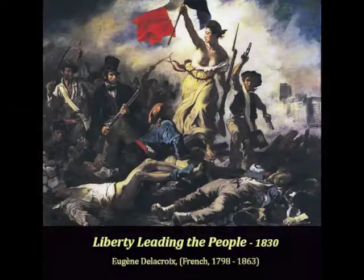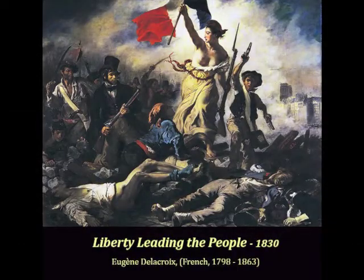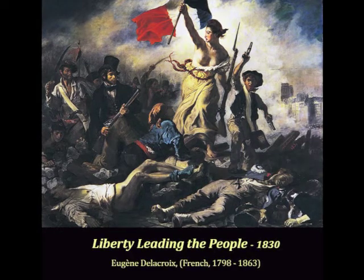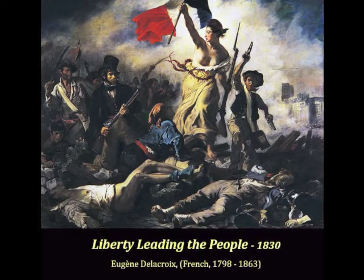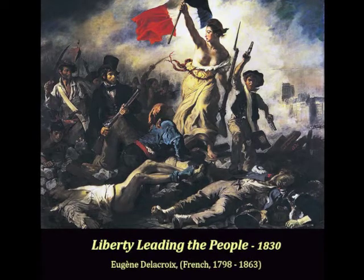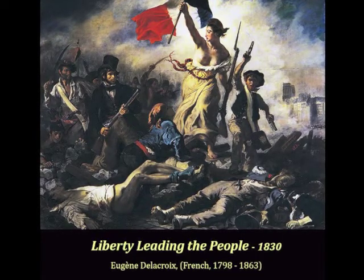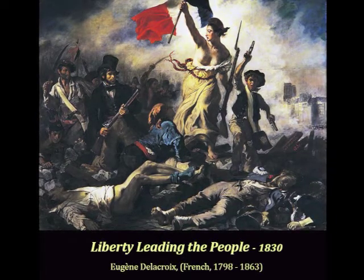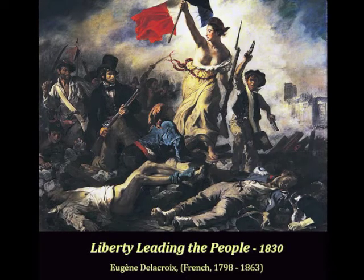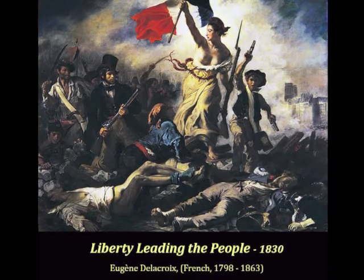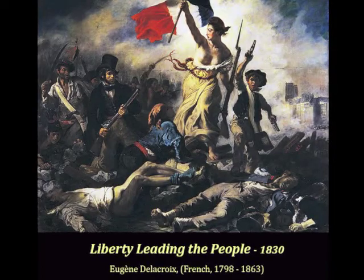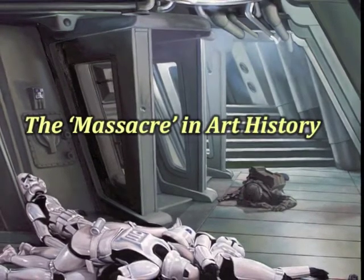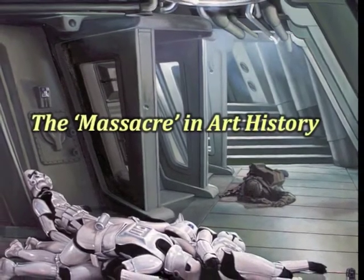I was immediately reminded of Eugene Delacroix's incredible painting, Liberty Leading the People, which depicts the July Revolution of 1830 in Paris, France. Painted in the same year, Liberty Leading the People is an iconic image that depicts victory for the masses at the expense of the King's soldiers. These soldiers, seen at the bottom of the painting, were indeed impediments to the revolutionaries, but they were also French citizens with lives and families who were unlucky enough to be caught in the unrelenting cogs of history.